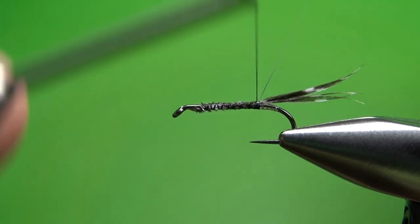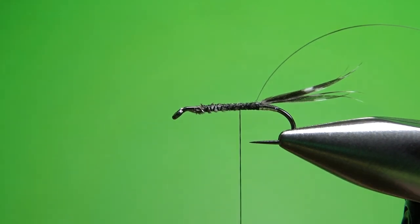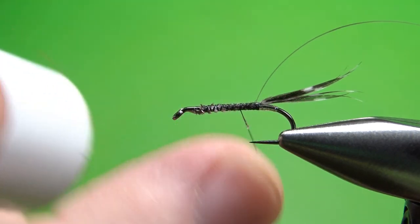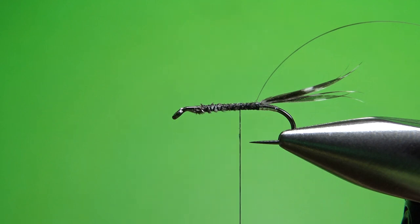All the way back to where that tail starts. Maybe just a hair in front of it so we can put this first dubbing wrap right behind it. So put a little wax on your thread and if you've got gray or light gray floss you could use that. That's what Bergman called for but Marbury's was a thicker dubbed body. So I'm going to split the difference and put a thin layer of superfine.